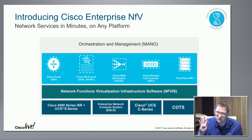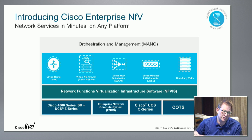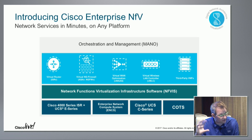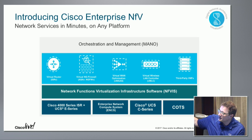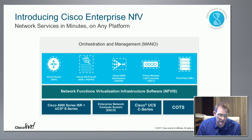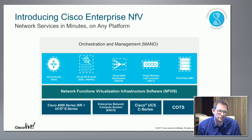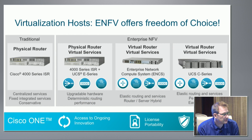Enterprise NFV has four main components. At the bottom we have an x86 hardware layer — hardware is essential, and x86 gives us flexibility, though we won't get the speeds and feeds from the switching side. The second component is the Network Function Virtualization Infrastructure Software, NFVIS, which gives us virtualization capabilities and the ability to run virtual machines on top of a standard Linux environment. The third layer is the VNFs themselves — virtual routers, firewalls, wireless LAN controllers. At the top we have orchestration and management for automation and deployment.